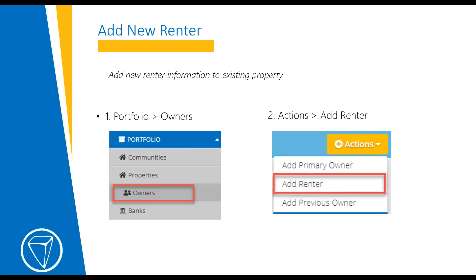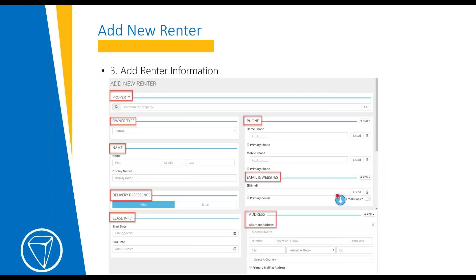First is adding a new renter to your existing properties. You'll do so by going to Portfolio and then Owners, next go to Actions > Add Renter. You'll see the Add Renter information where you can type in your property name to search for the property address. Be sure you're on the correct owner type as Renter, add your name, phone number, email address, any information you have, and an alternate address if you have that for your renter. Lease info — you may or may not have this for renters, but if you do, it is important that you add it here.